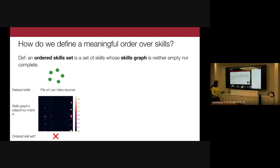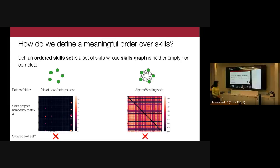We constructed this definition because we found real datasets where the skills graph was complete or empty. For example, taking the Pile of Law and splitting it by legal data sources — tax court rulings, US Bill of Rights, UN conversations — we found very few directed edges; the adjacency matrix was nearly completely sparse. This suggests all skills were roughly independent, and the best approach is simply to sample one-over-k points per skill and learn them equally.